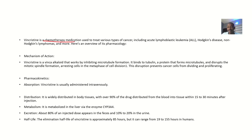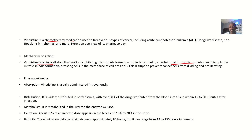Vincristine is used to treat various types of cancers including acute lymphoblastic leukemia, Hodgkin's disease, non-Hodgkin's lymphomas, and more. For mechanism of action, vincristine is a vinca alkaloid that works by inhibiting microtubule formation. It binds to tubulins — the proteins that form microtubules — and disrupts mitotic spindle formation.